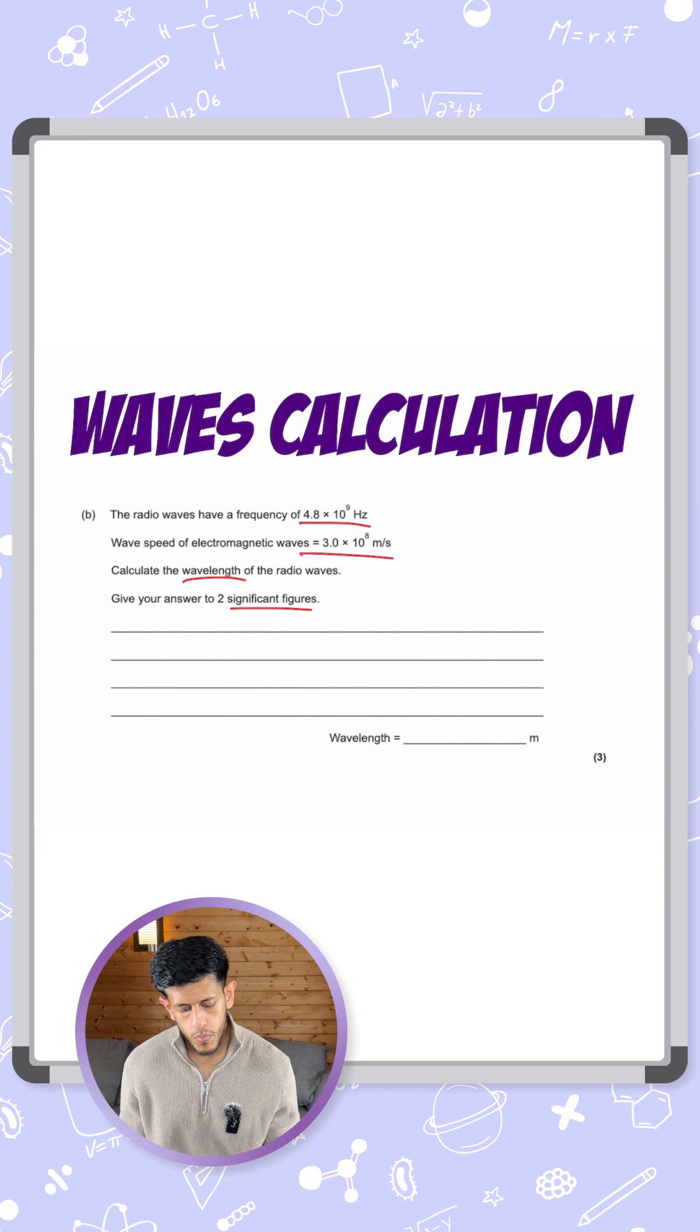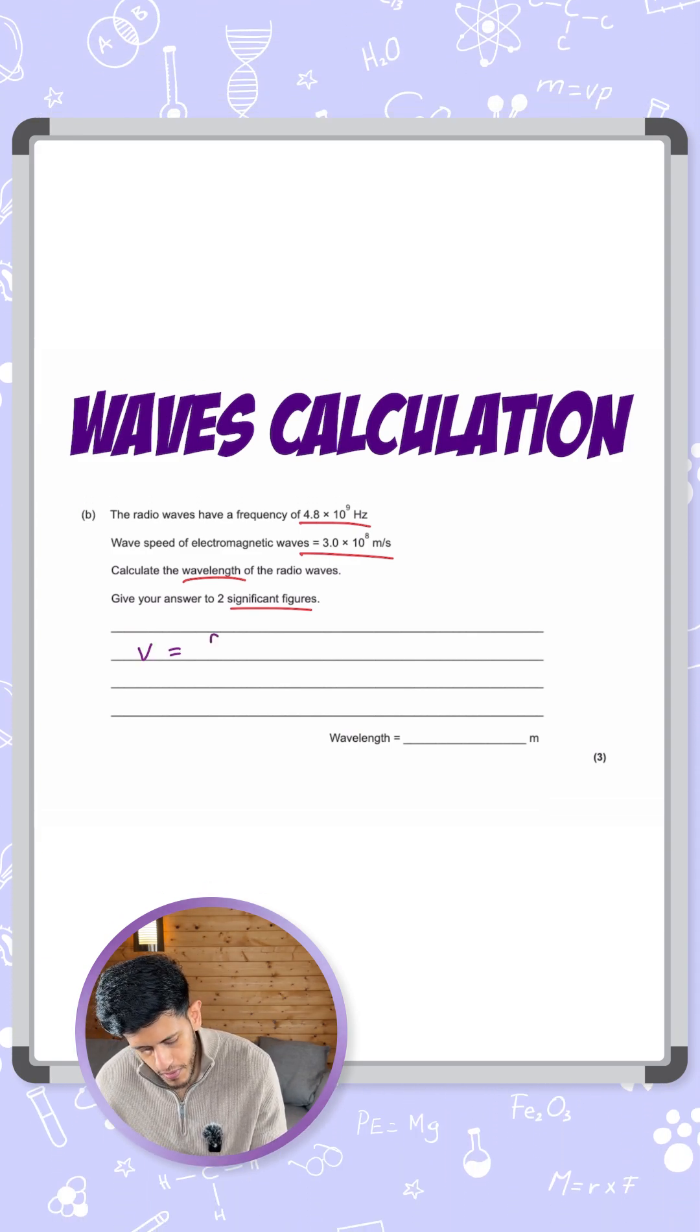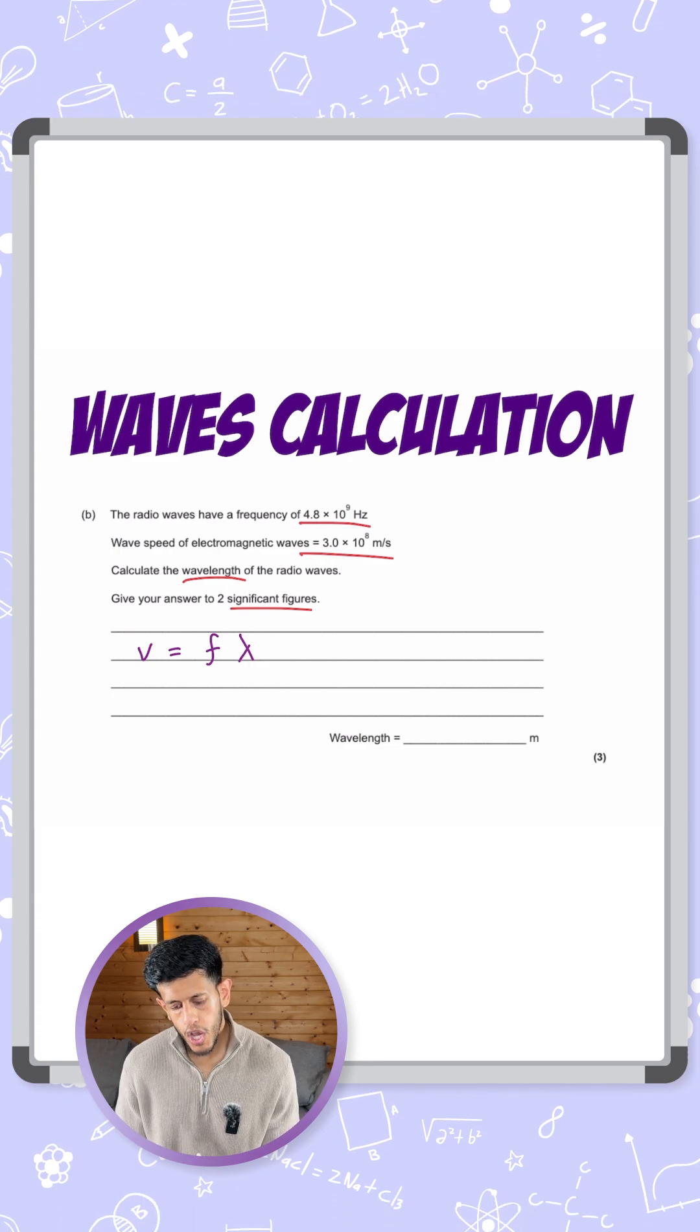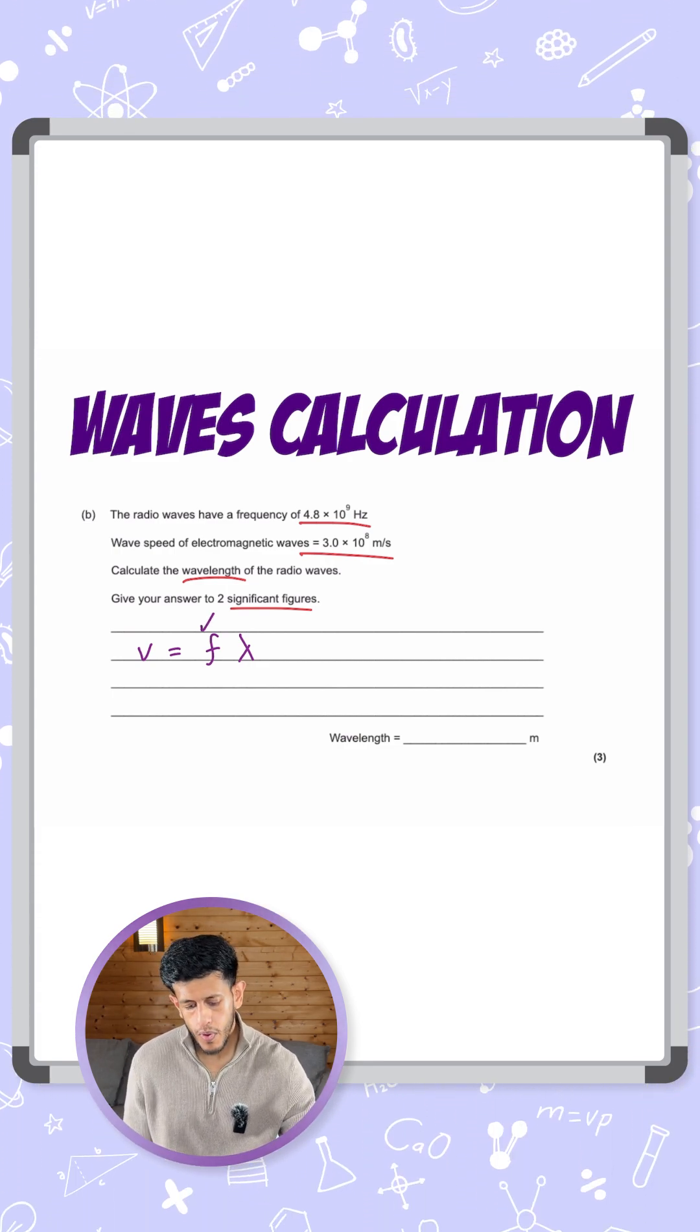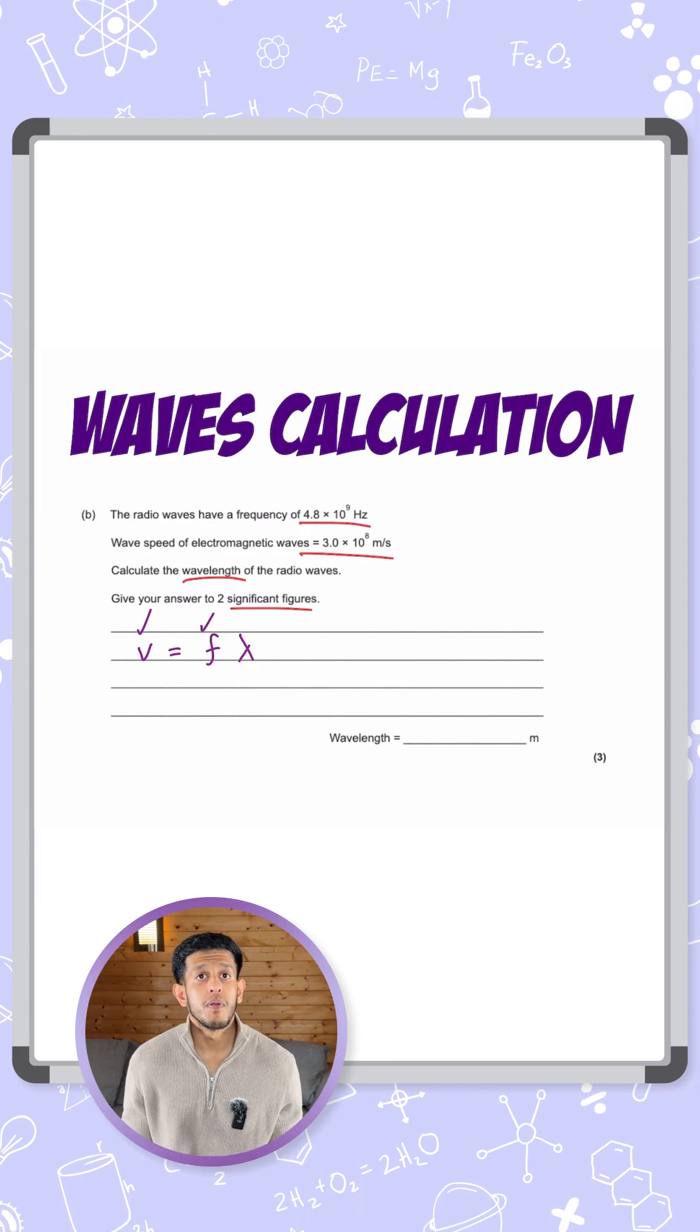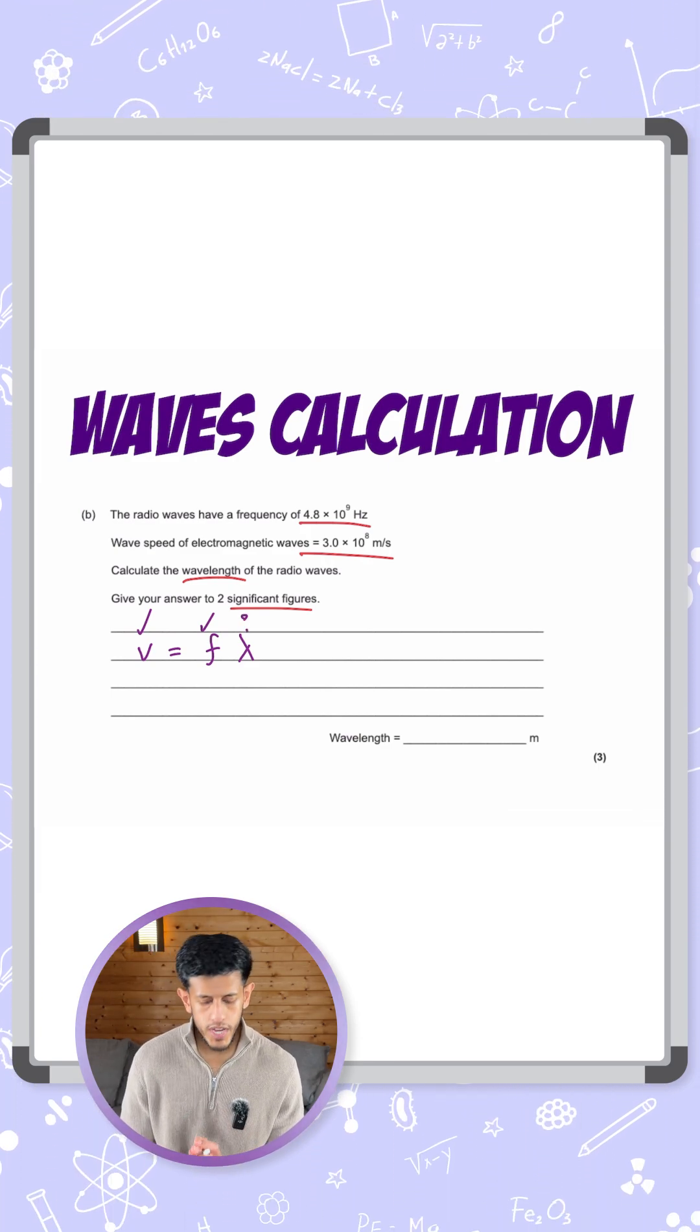Okay, so the equation for waves is wave speed, or V, equals frequency times wavelength, F lambda. So what do we know here? We know the frequency, 4.8 times 10 to the 9 hertz, and we're given the wave speed, 3 times 10 to the 8, and we want to find the wavelength. So that's the question mark. So we need to rearrange this equation.